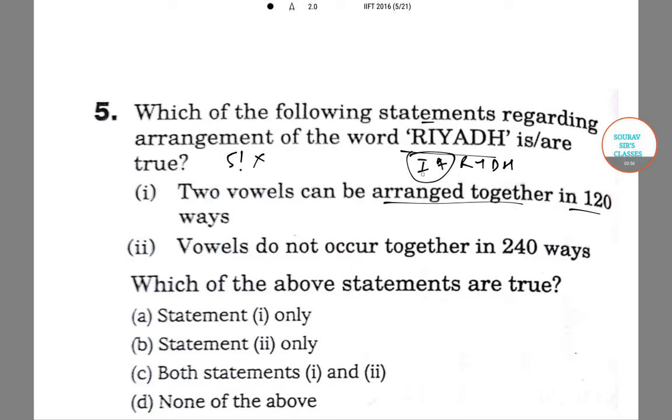So 5 factorial, and I and A can be arranged within themselves in 2 factorial. So 5 factorial into 2 factorial, 120 into 2 is equal to 240 ways. So option A is incorrect.